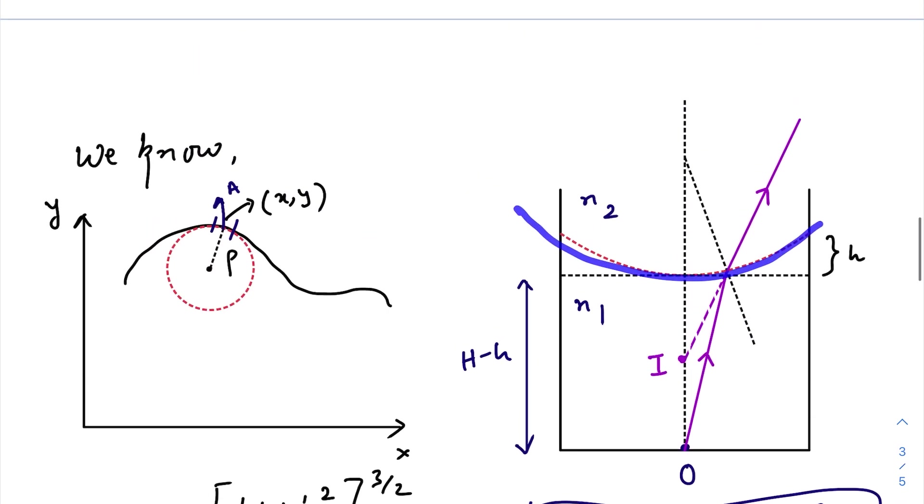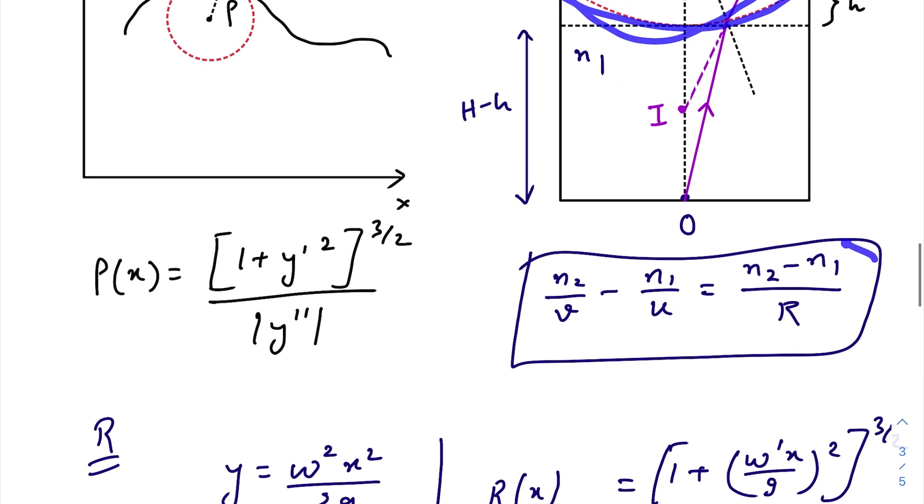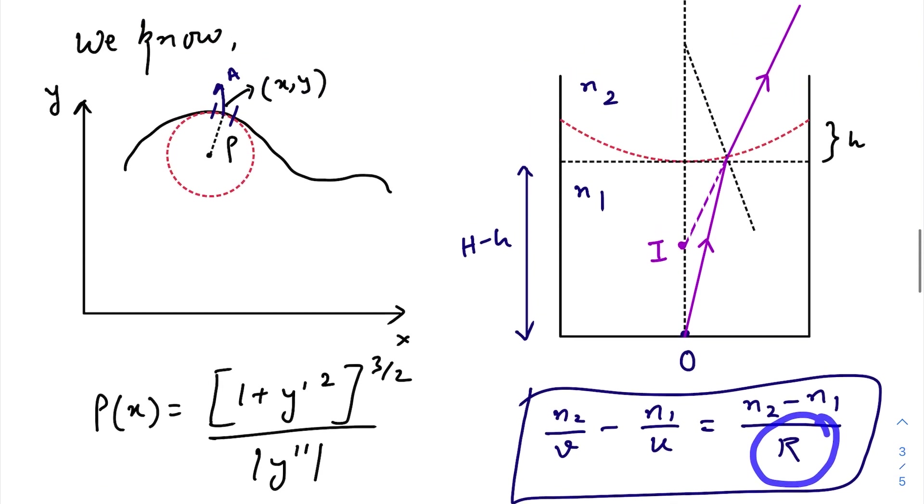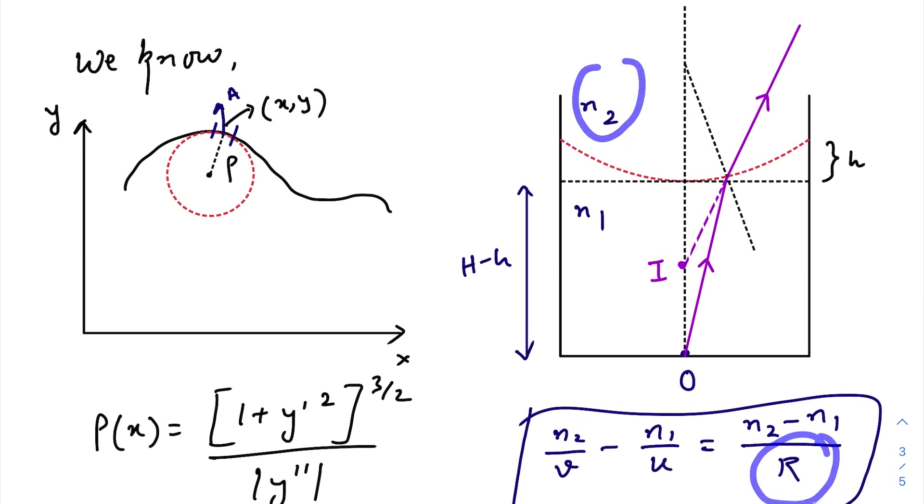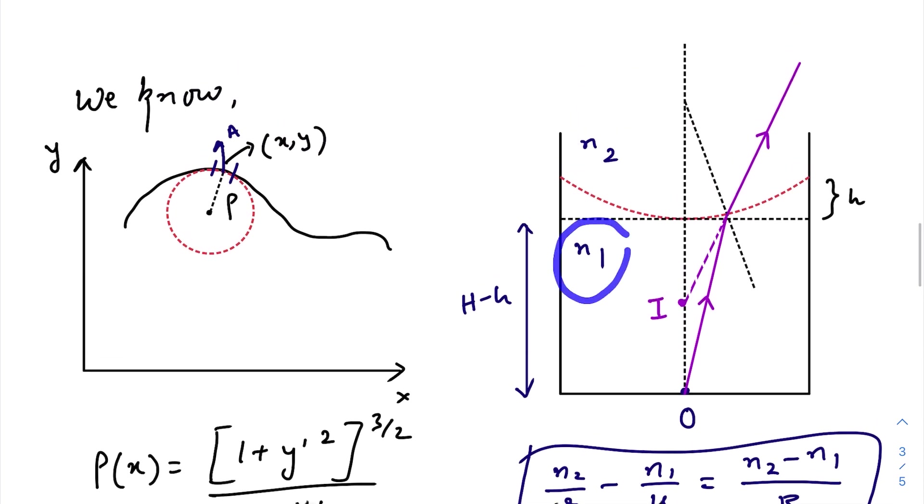...considering this one is n₁, this one is n₂, we know the general formula for a spherical surface, refraction at a spherical surface is: n₂/v - n₁/u = (n₂ - n₁)/R, where v being the image distance, u being the object distance, and R is the radius of curvature...